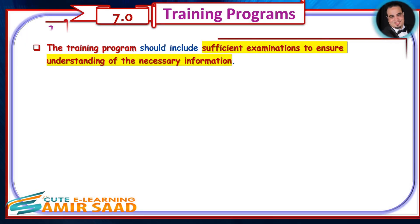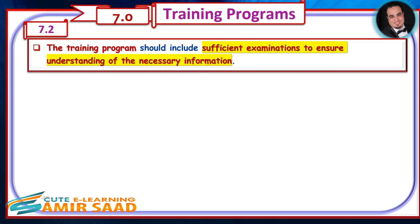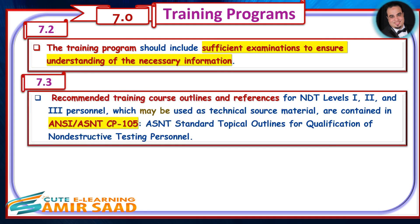The training program should include sufficient examinations to ensure understanding of the necessary information. Recommended training course outlines and references for NDT Levels 1, 2, and 3 personnel, which may be used as technical source material, are contained in ANSI/ASNT CP-105, ASNT Standard Topical Outlines for Qualification of Non-Destructive Testing Personnel.